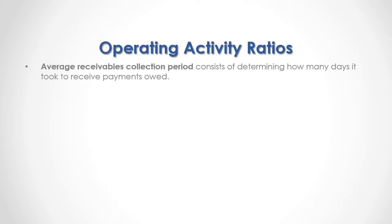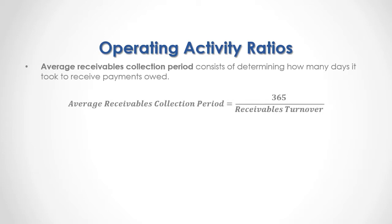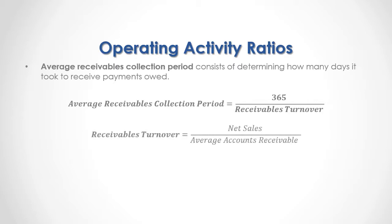Average receivables collection period consists of determining how many days it took to receive payments owed. As a formula, the average receivables collection period is equal to 365 days divided by the receivables turnover. Receivables turnover is equal to net sales divided by the average accounts receivables.